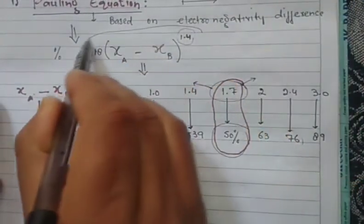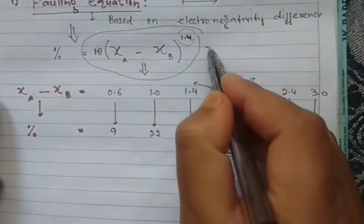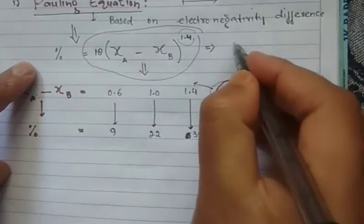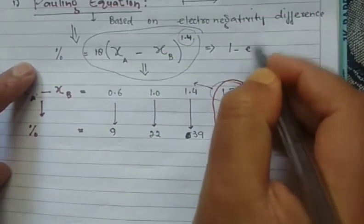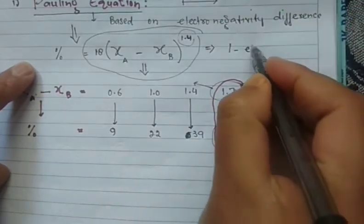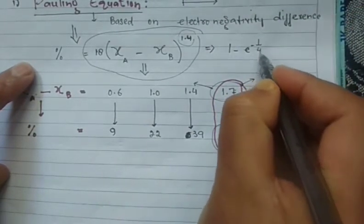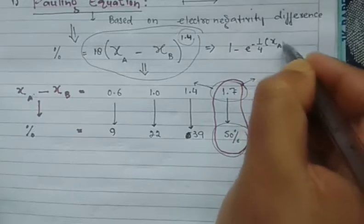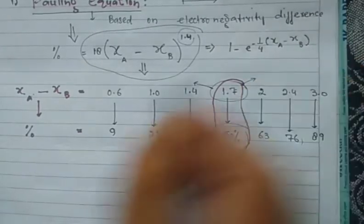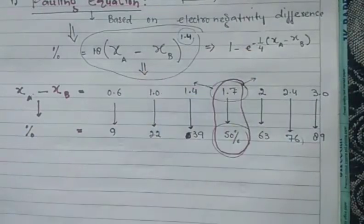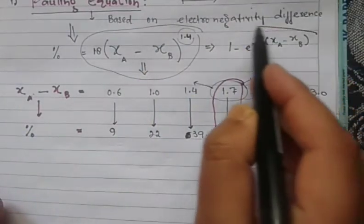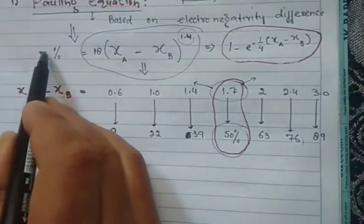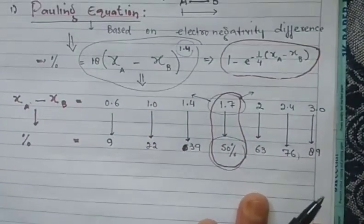This equation is also sometimes seen in another form. It can be written using an exponential: the percentage of ionic character involves the exponential of −1/4 times (χ_A − χ_B)², which is just a converted form of the same equation. Either form may appear in questions, so be aware of both.